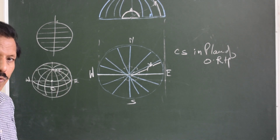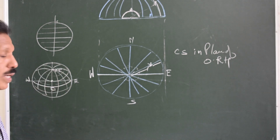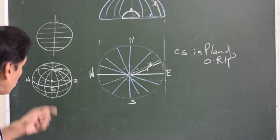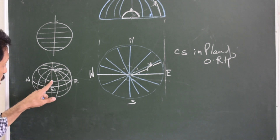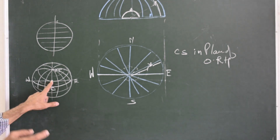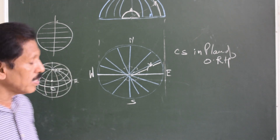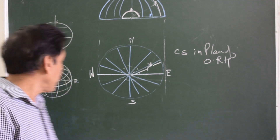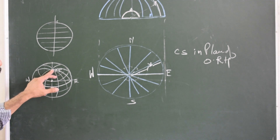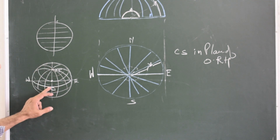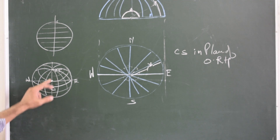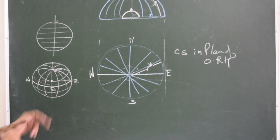As I told you before, the earth can be considered as a transparent globe with a powerful point source of light in the center. When that light is switched on, the graticule will fall on the celestial sphere as a shadow. The shadow of the geographic pole will become the celestial pole, the shadow of the equator will become the equinoctial, the geographical meridian will become the celestial meridian, and so on.